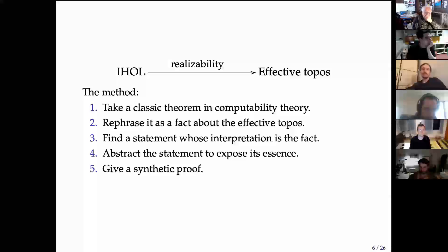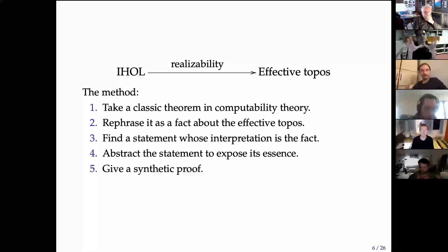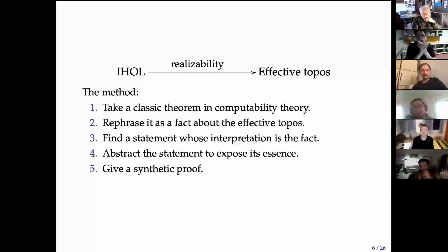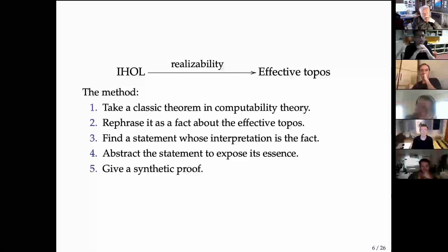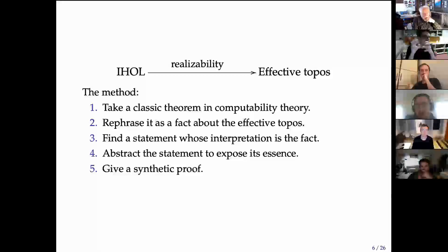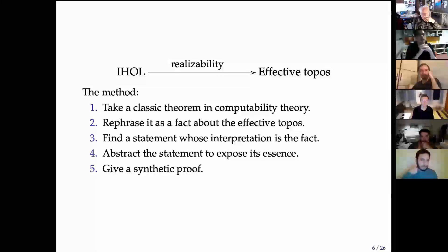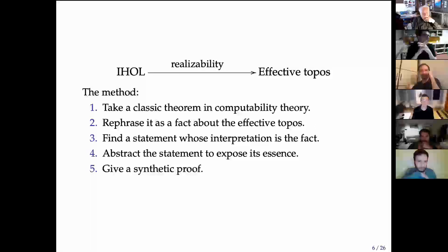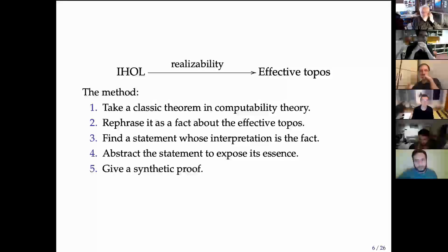We're going to use the effective topos, discovered by Martin Hyland in the 1980s. People expected it to be there and when it was found that was a big event in the corner of computability theory related to category theory. Its internal language is intuitionistic higher-order logic — a very limited form of set theory — and the interpretation is the realizability interpretation, which I'll review.